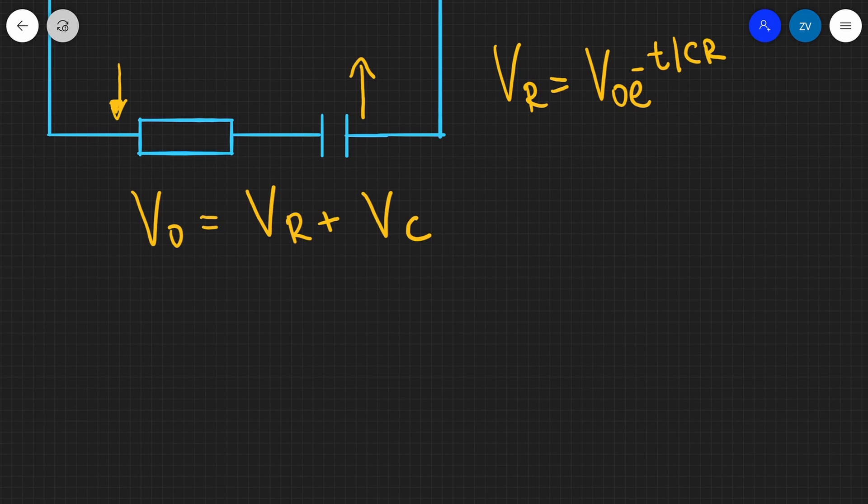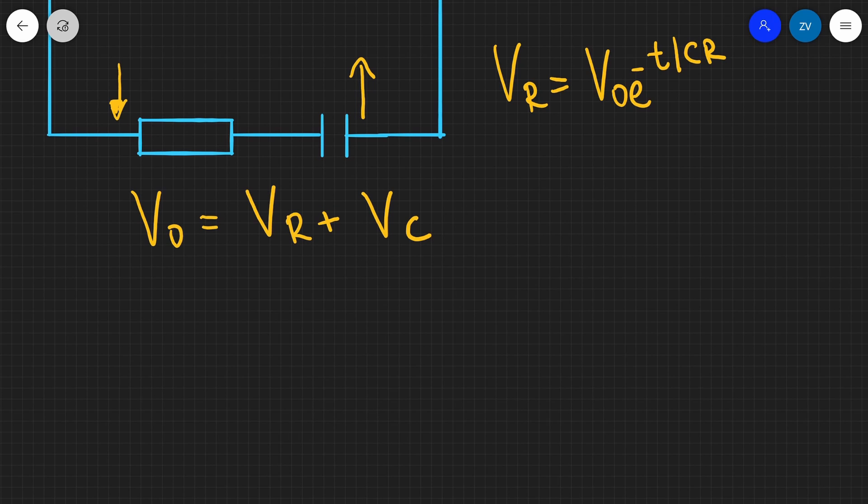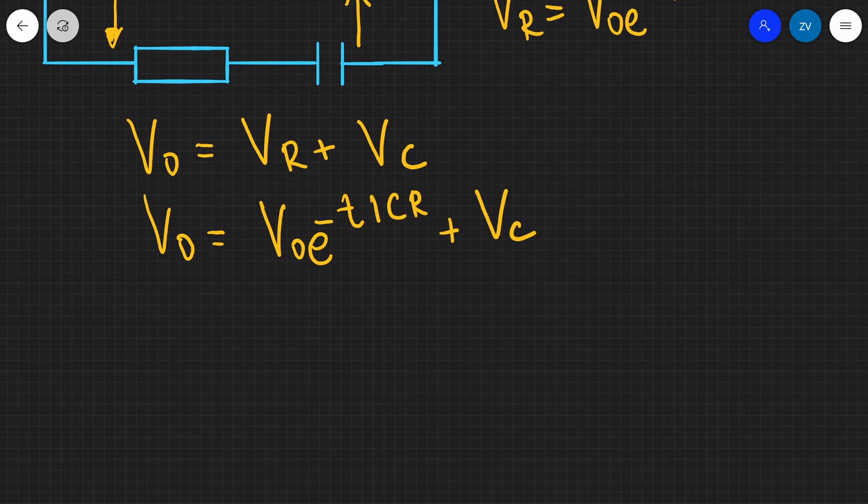We already have an expression for VR, so we can go ahead and substitute that in. So V0 is going to equal V0 e to the minus T over CR plus the potential difference across the capacitor. Now I can just go ahead and rearrange for the potential difference across the capacitor. What we're going to get is that our VC is going to equal V0 minus V0 e to the minus T over CR.